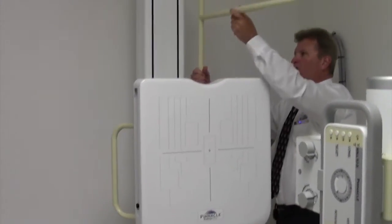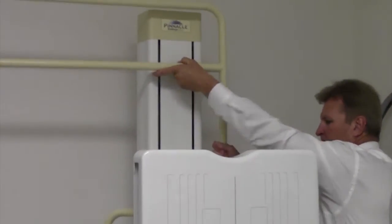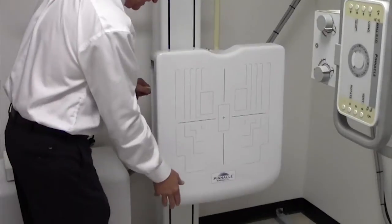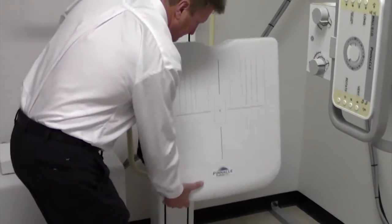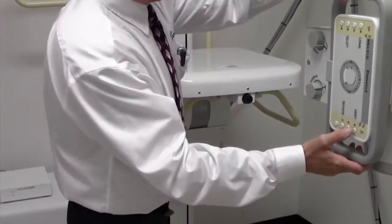The patient assist bar can be easily rotated around and out of the way to do a hand x-ray or lower extremity. The tilting mechanism comes up.